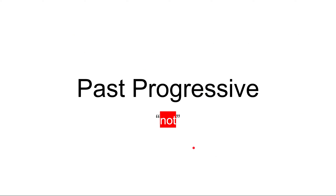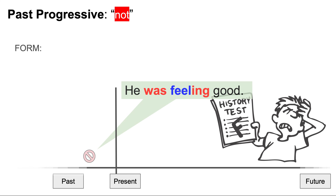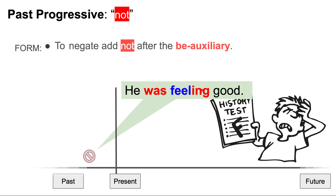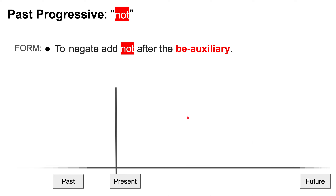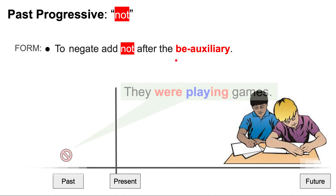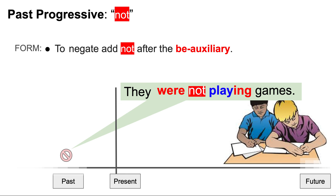Now let's look at negating the past progressive. For example: he was feeling good. To negate, we add 'not' after the BE auxiliary: he was not feeling good. Another example: they were playing games becomes they were not playing games.